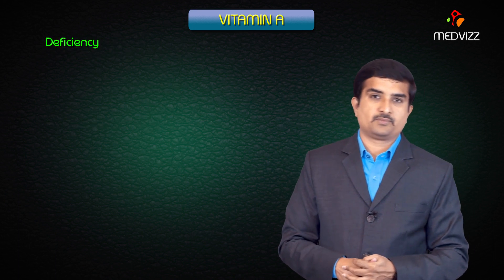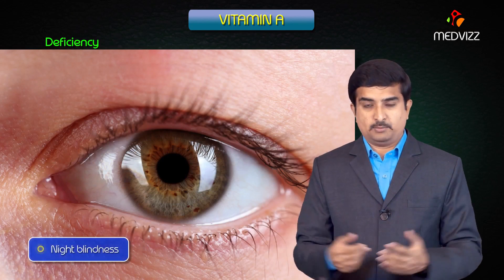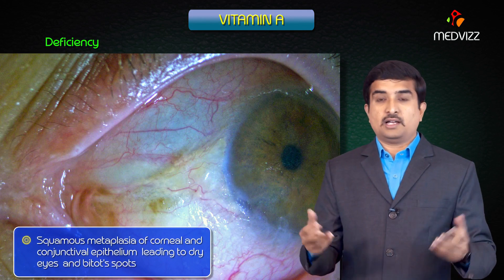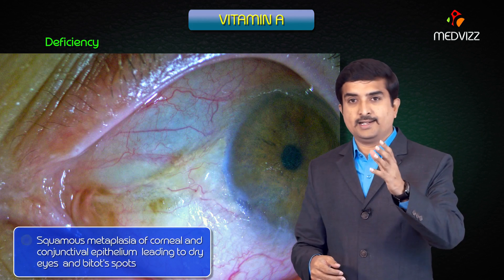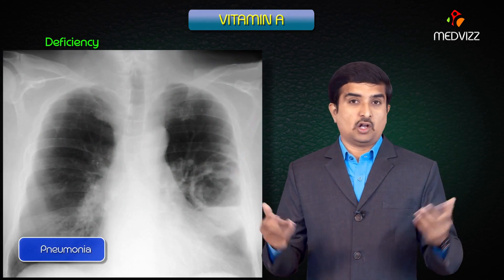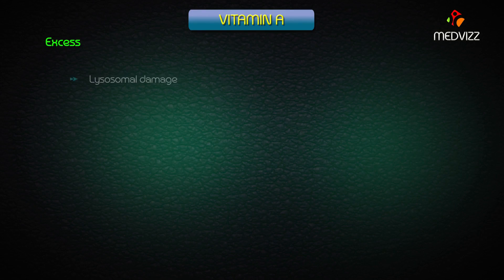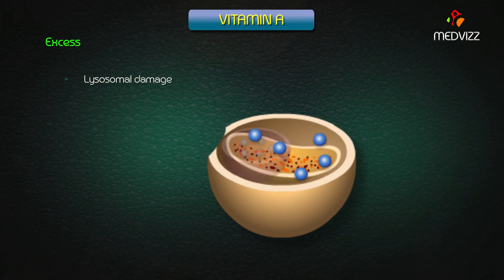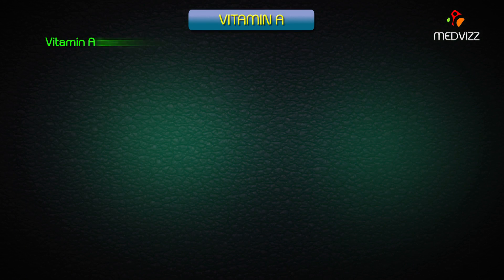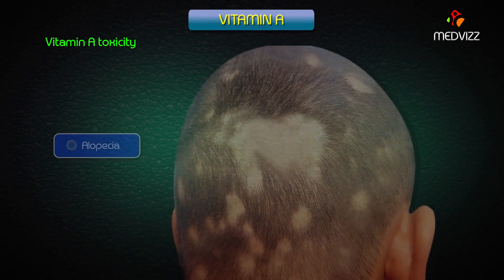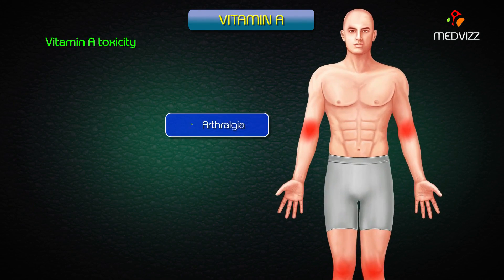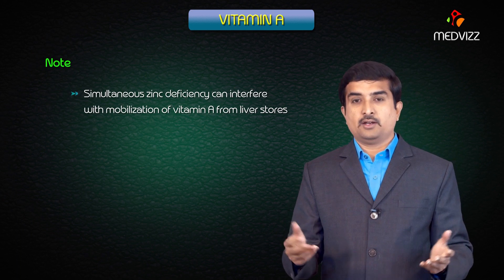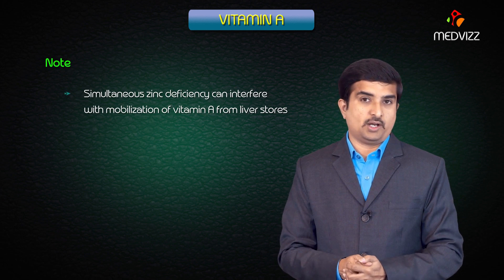Vitamin A deficiency can cause night blindness, dry skin (follicular hyperkeratosis), squamous metaplasia of the cornea and conjunctival epithelium leading to dry eyes and Bitot's spots, and in extreme cases, pneumonia. In cases of excess vitamin A, it can cause lysosomal damage. Clinical manifestations of vitamin A toxicity include headache, sore throat, alopecia, liver damage, and arthralgia. Simultaneous zinc deficiency can interfere with the mobilization of vitamin A from liver stores.